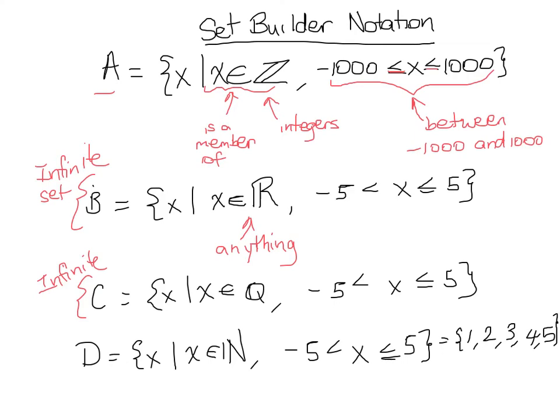So those are the natural numbers between negative 5 and 5, and it does, according to this, include 5, so I put it there. So we can list the natural numbers between negative 5 and 5.